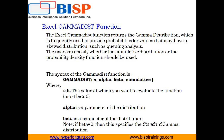The last argument is cumulative, which is a logical value that determines the form of the function. If cumulative is TRUE, then it returns the cumulative distribution function. If this value is FALSE, then it returns the probability density function.